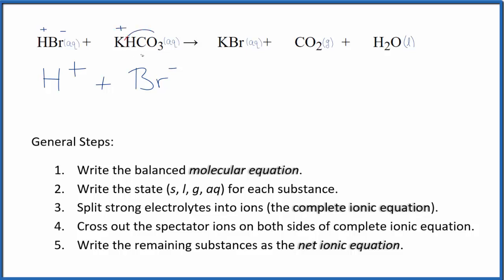Potassium is group 1, and the hydrogen carbonate ion is 1-. So we'll have K+ and HCO3-. These are the reactants in our complete ionic equation.